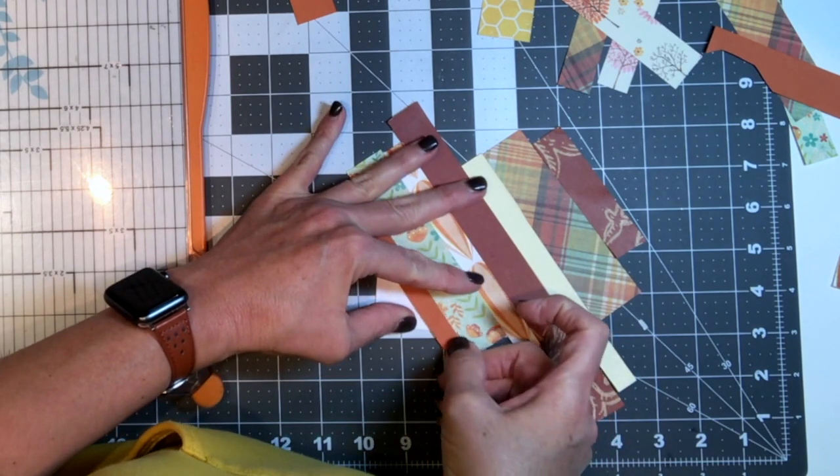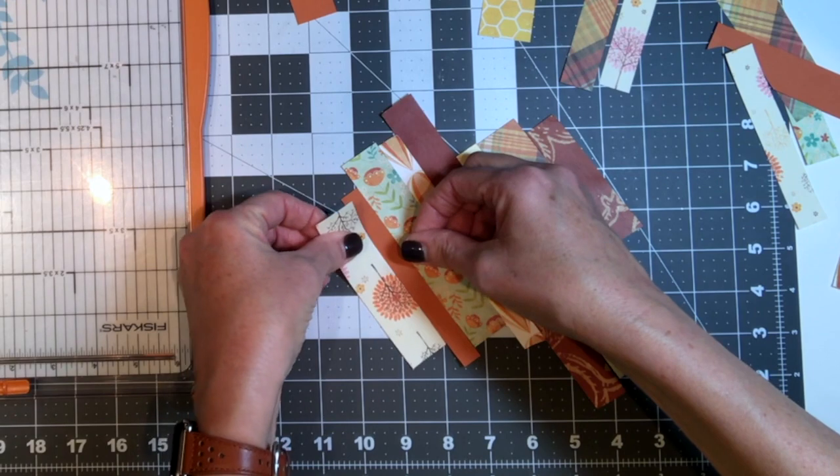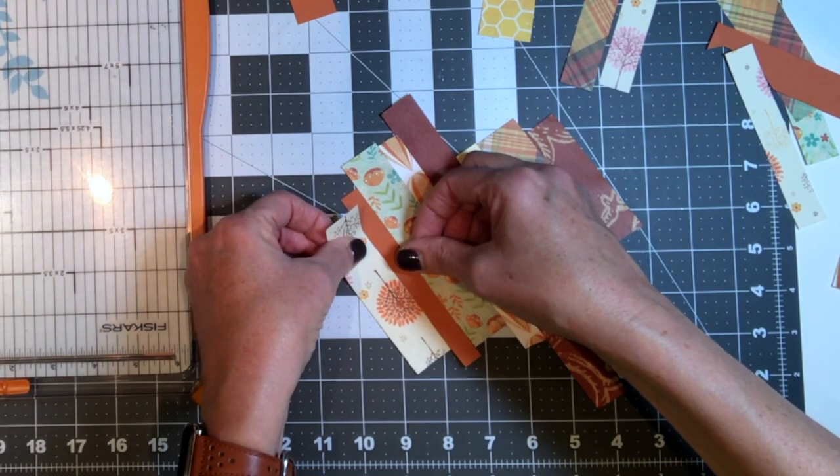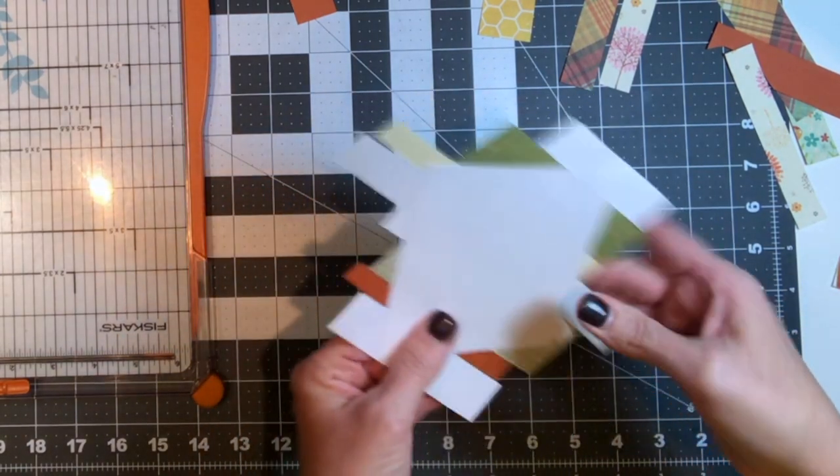I don't like to use a little tiny piece for the corner. I usually like to use something that's at least a half of an inch wide on the corner piece.